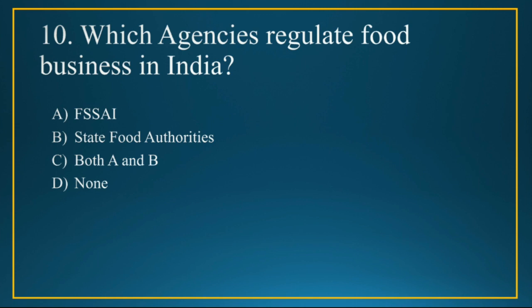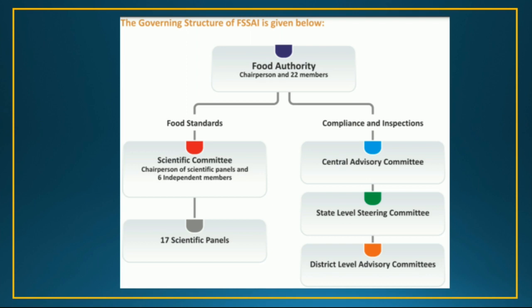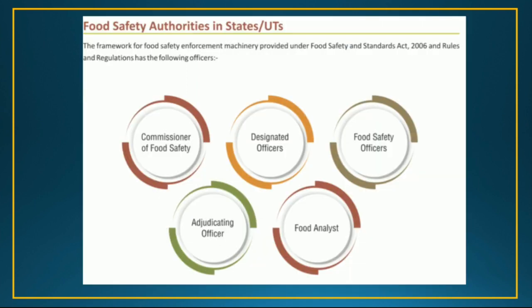Q10 — the last question: Which agencies regulate food business in India? The options are FSSAI, State Food Authorities, both A and B, or none. For the enforcement of food safety across the country, both FSSAI and State Food Authorities jointly share the responsibility, so the answer is option C. FSSAI has a chairperson and 22 members; food standards are made by different committees and scientific panels, with various compliance and inspection committees. Food safety authorities operate at every state and union territory level, and together they ensure food safety across the country.